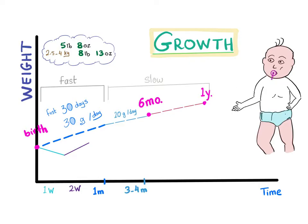A neonate usually gains by the rate of 30 grams per day in the first 30 days. So, in the first month, 30 days, 30 grams per day. Easy to remember, 30 and 30.